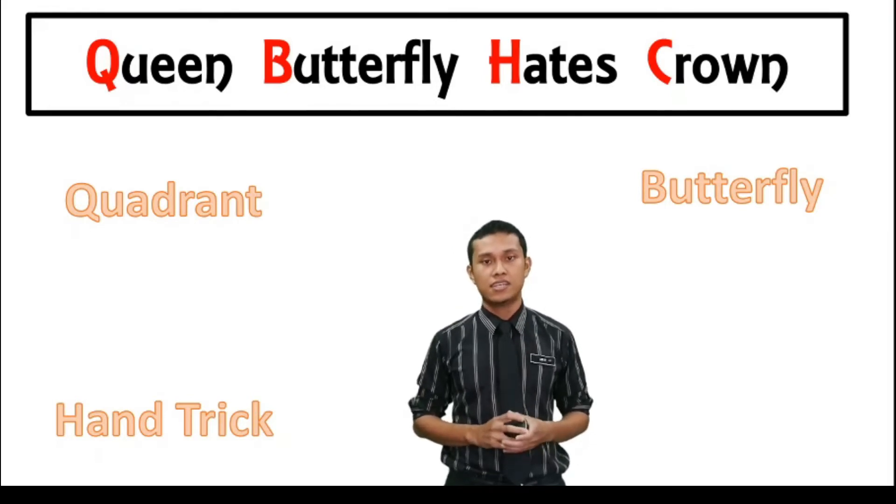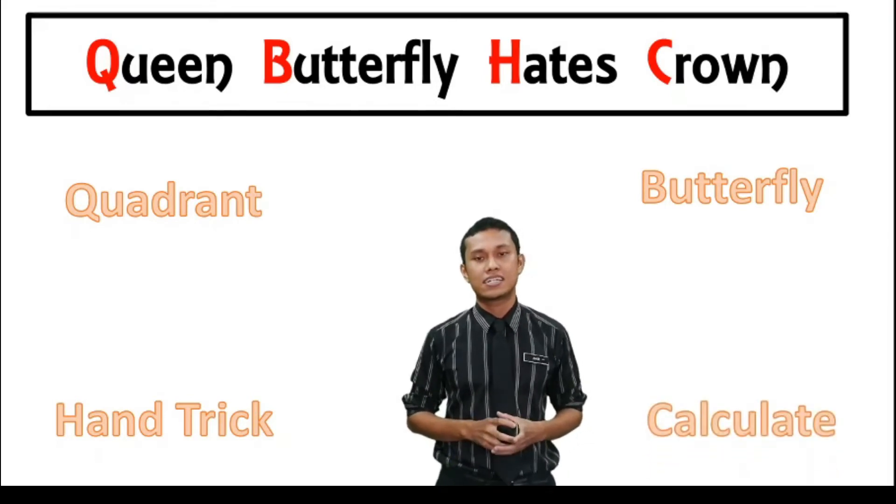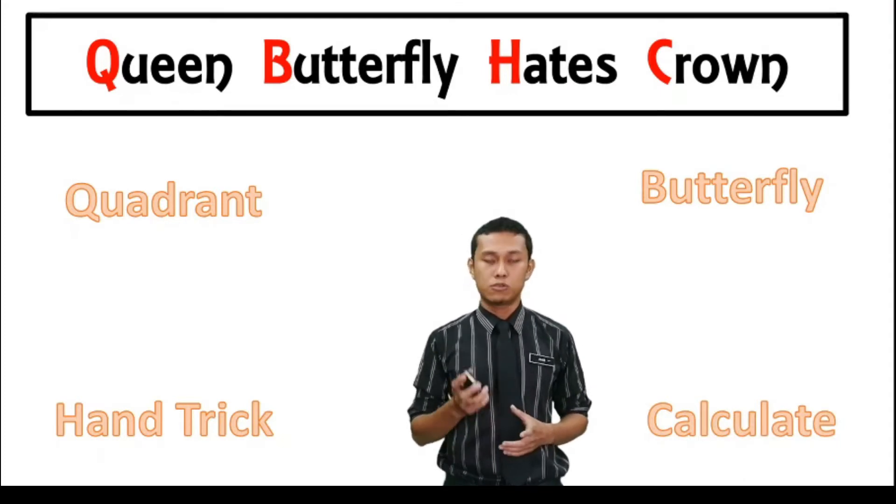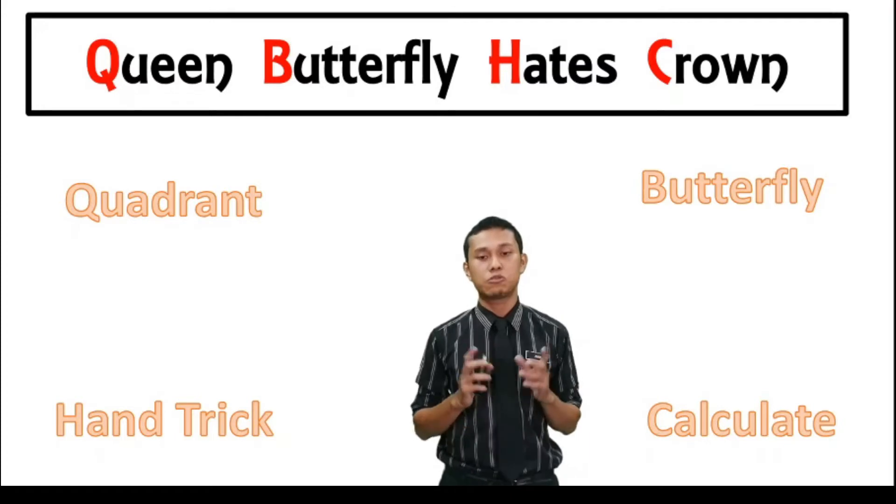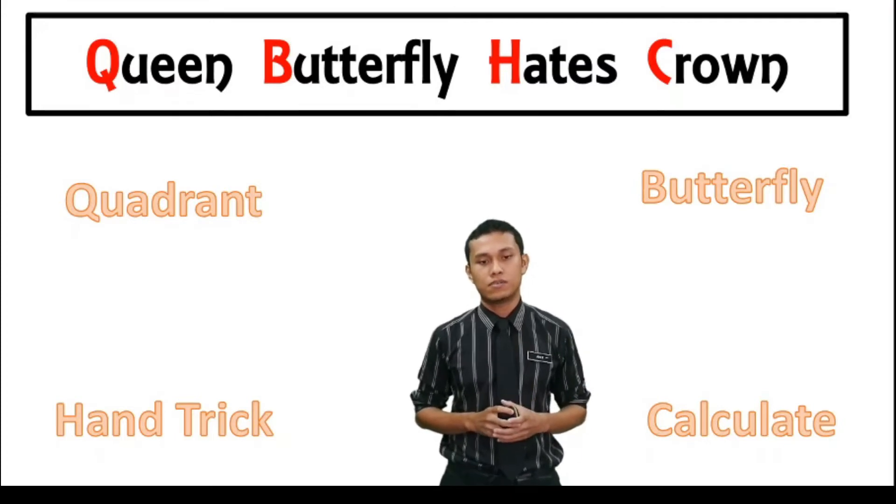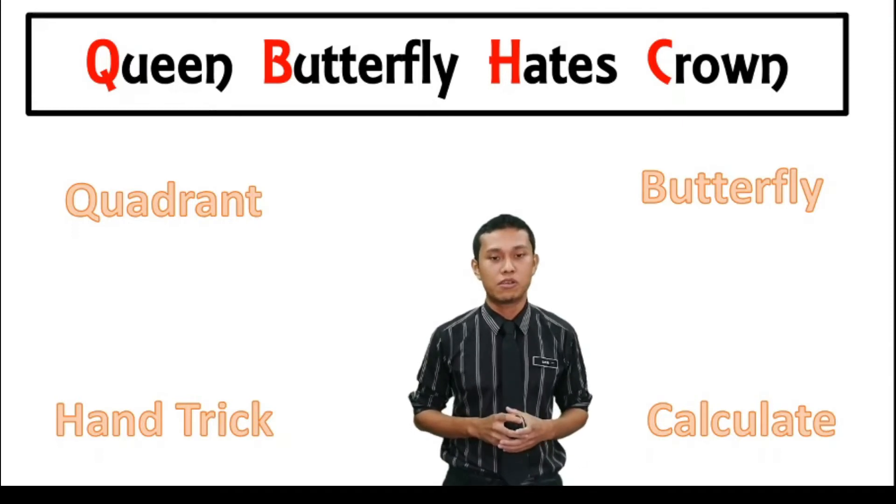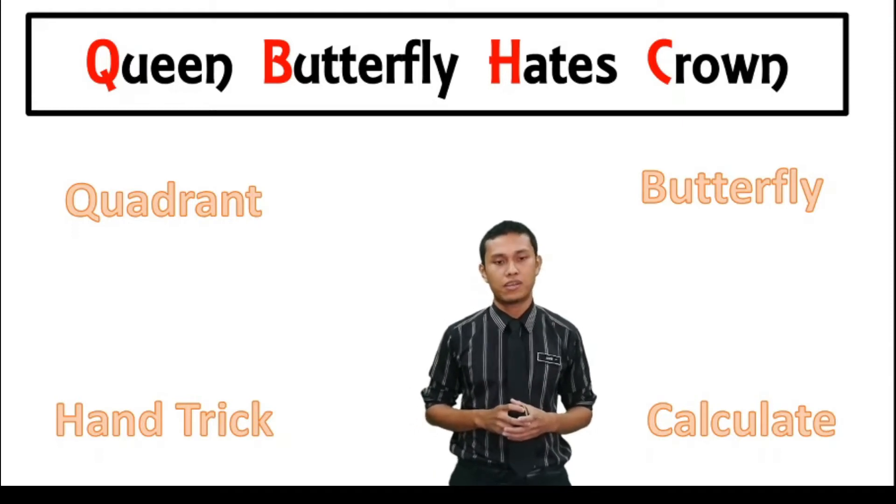And lastly, we will use the calculation which we need to use to answer the real question given to us. So this can be represented by the sentence Queen Butterfly Hates Ground or we can call it QBHC.